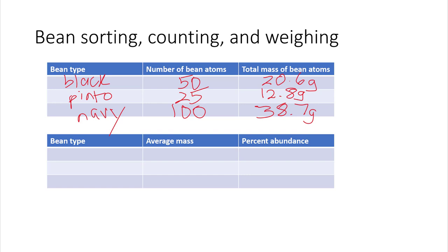Under the number of beans, I wrote 50, 25, and 100. And under the total mass of the bean atoms, I wrote 20.6 grams, 12.8 grams, and 38.7 grams. Now these are made up numbers, but you actually did this. You sorted the beans, you counted them, and then you weighed them.